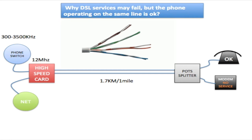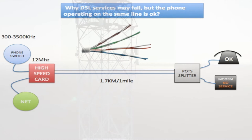I went ahead and drew this diagram to explain to you why DSL services may fail but the phone operating on the same line is okay.